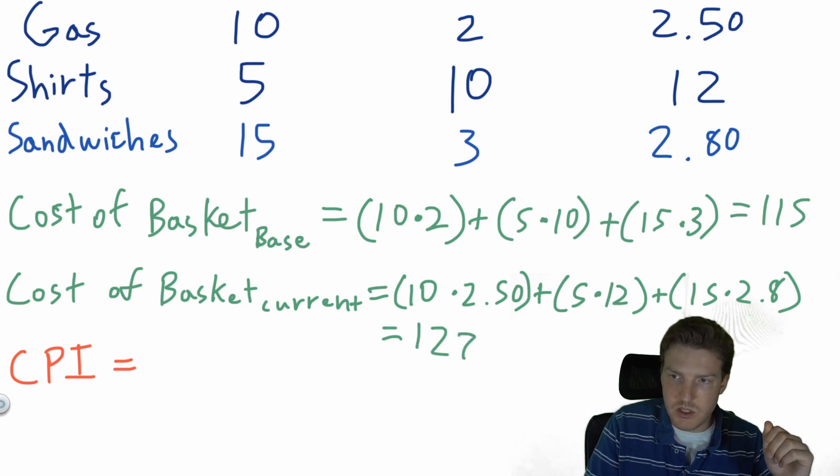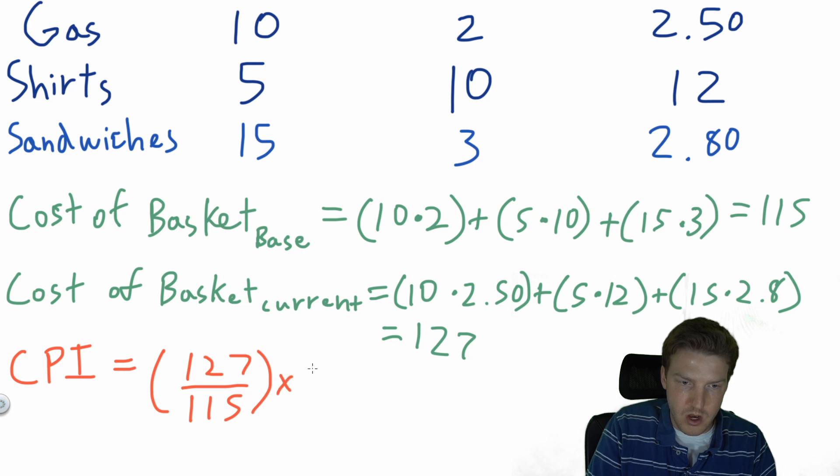Now for the CPI, we said we take the cost of the basket at the current prices. So $127 divided by the cost of the basket at the base prices, which was $115, and we multiply it by 100. This gives us a CPI value of 110.